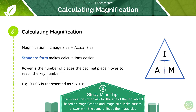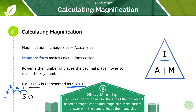One more thing: remember how standard form works — we covered this in tutorial number one, so if you're unsure go back. To quickly recap: if you have a power to the minus three, that means you're moving the decimal point three places to the left. For example, 5.0 × 10⁻³ means moving the decimal place three places to the left. If you're unsure, go back to tutorial one because we talk about it in more detail there.